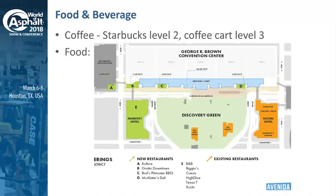For food and beverage, with move-in starting on Saturday, we've had discussions with the convention center to make sure we have options open starting Saturday through Monday. There are four permanent locations — restaurants owned and operated separately from the center — labeled A through D on the map. And of course Starbucks is in the building too, so hopefully we'll be set on all food and beverage needs.